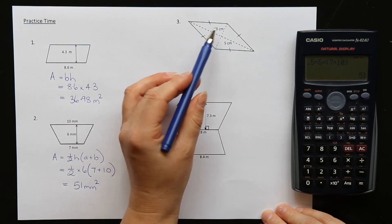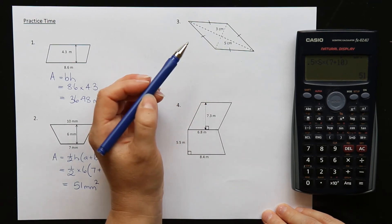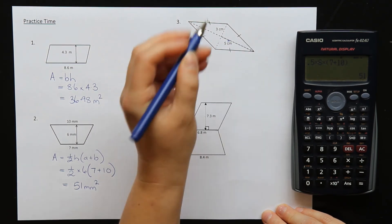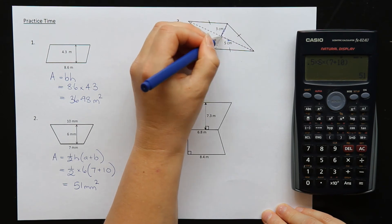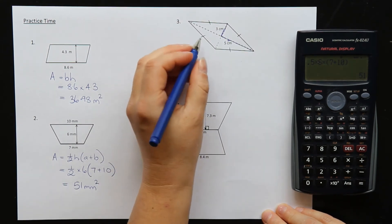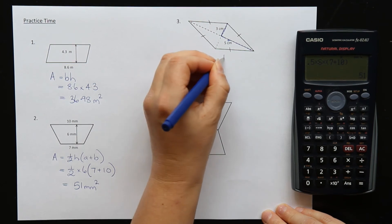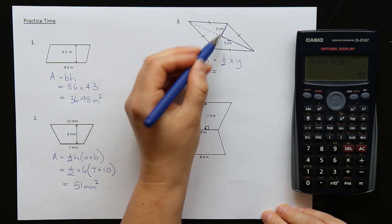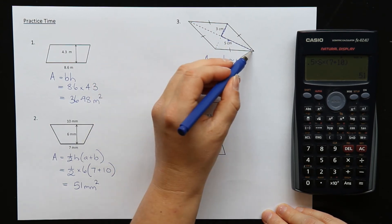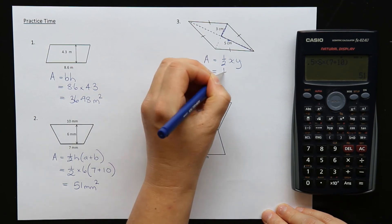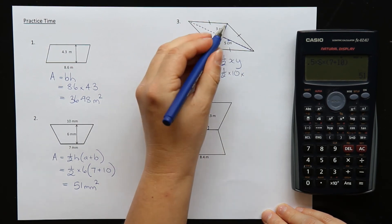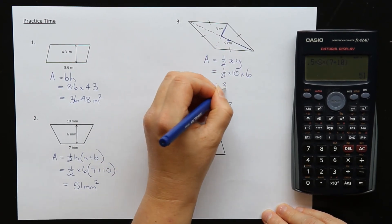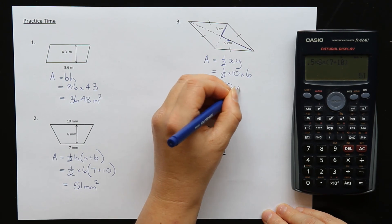Question three is a rhombus. Now this 5 is pointing at just this half of the line and the 3 is for this part. So when we do our rhombus, our formula is half XY, but they need to be the whole way for them to be the X and the Y. So this whole length would be 10 and that whole length would be 6. So half times 10 times 6 is 30 centimeters squared.